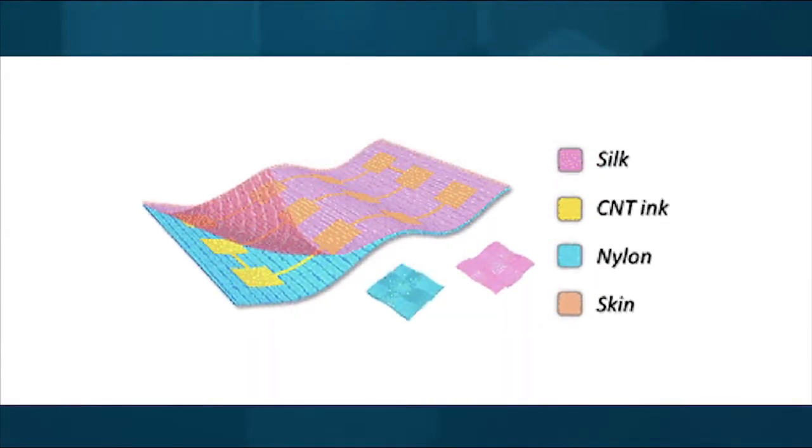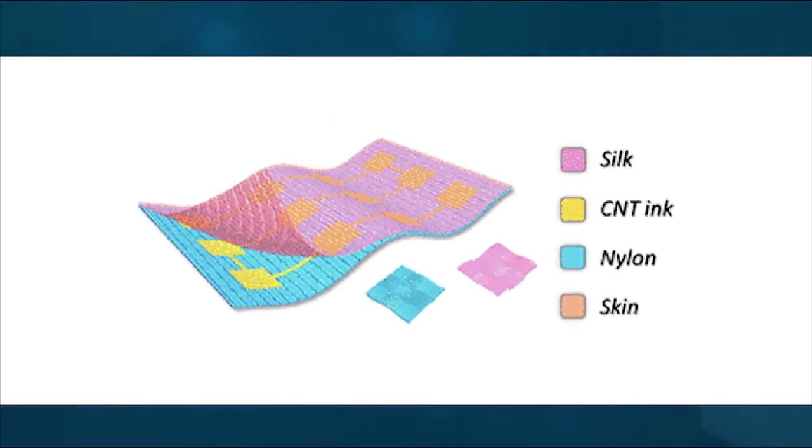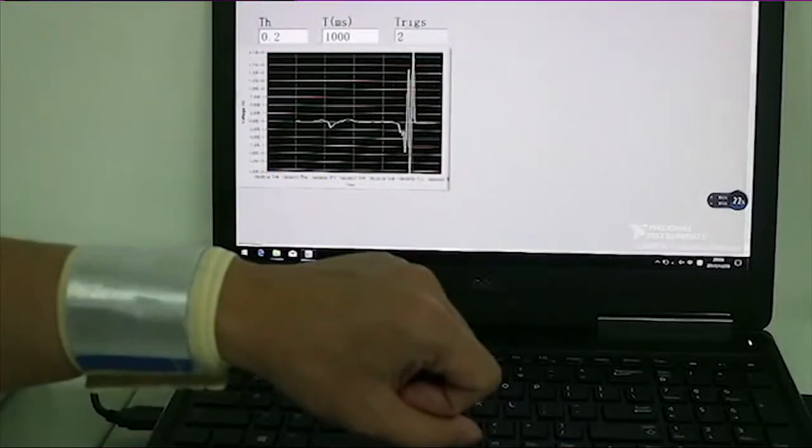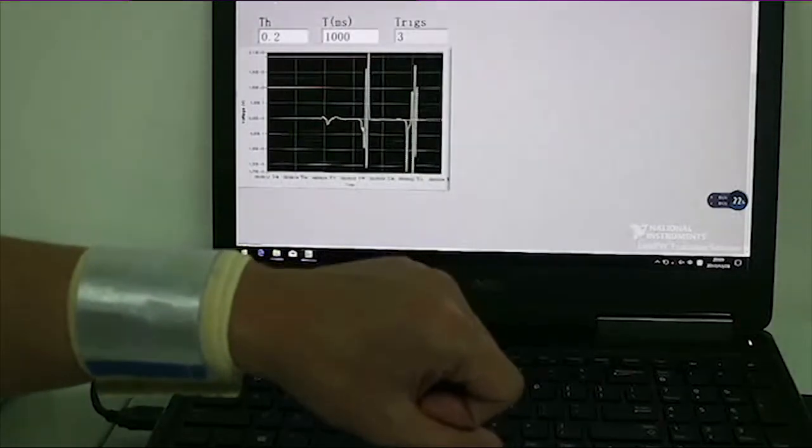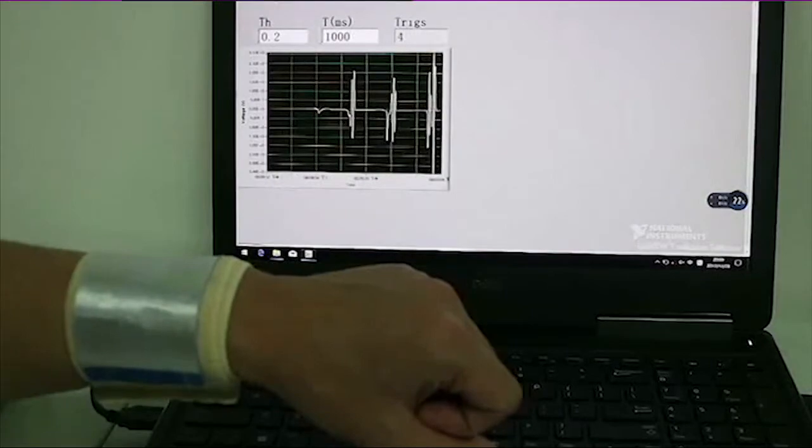They covered the array with a piece of silk and fashioned the textile into a wristband. When swiped with a finger in different directions, such as side to side, up and down, and in a circle, the e-textile generated electrical signals that could control computer programs.